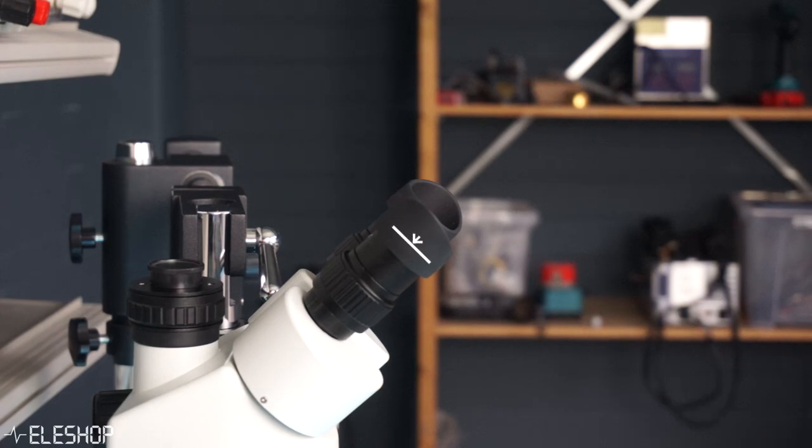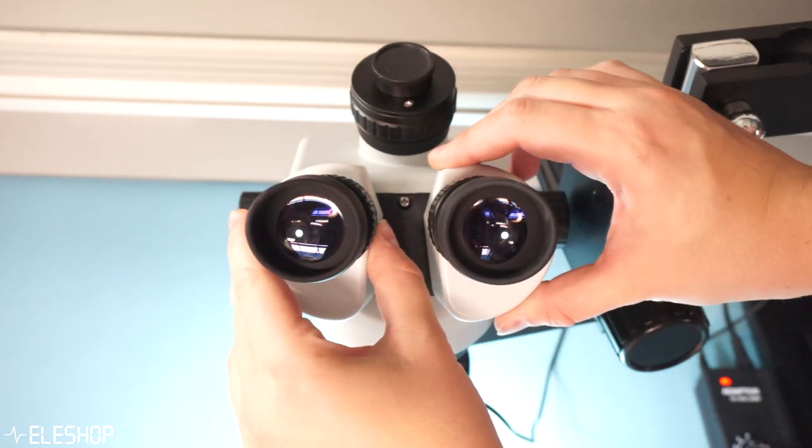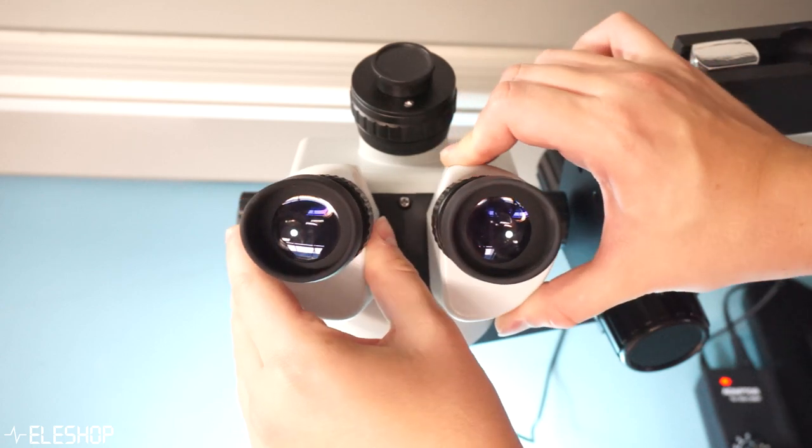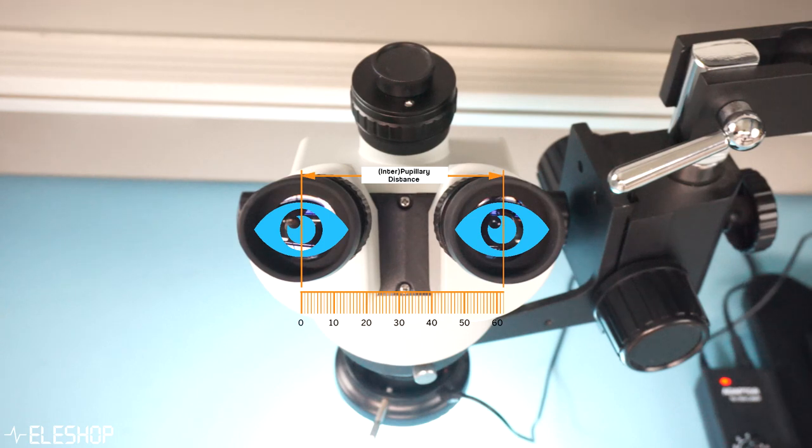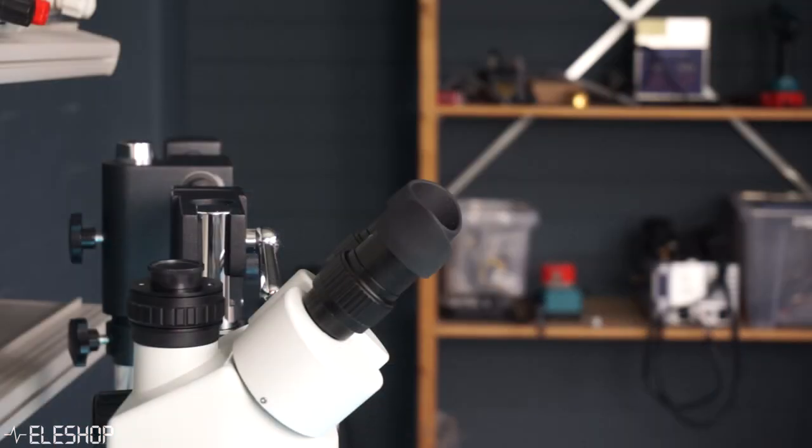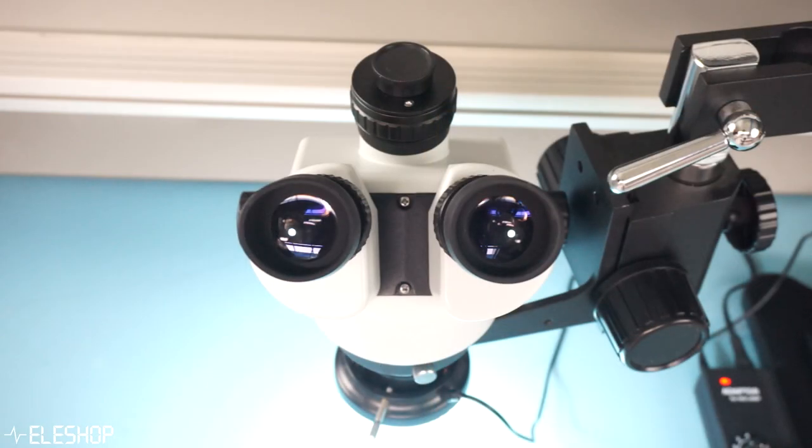Now place your eyes about one centimeter from the eyepieces and bring the eyepieces closer to or further away from each other until you see a single image with no black spots. The distance between the center of the eyepieces should match with the distance between the center of your pupils. Do not lean into the eyepieces because you won't see a good single image without black spots and you will probably smudge your lenses. So it is important to stay distant with your eyes from the eyepieces.